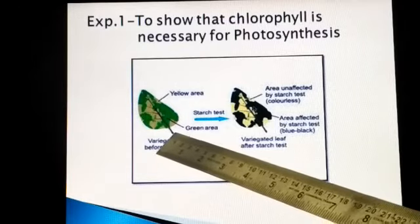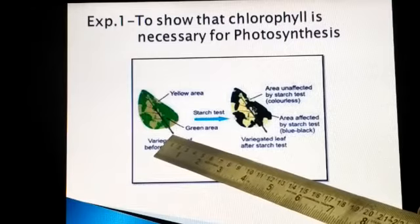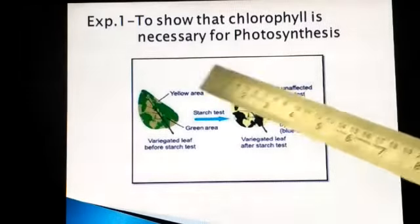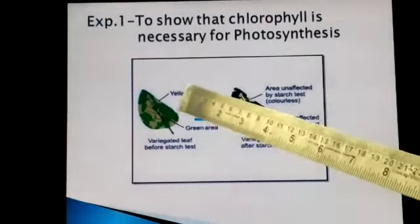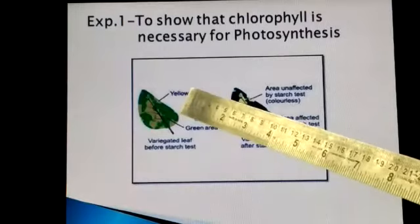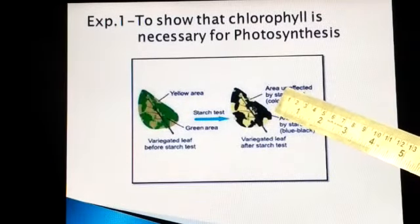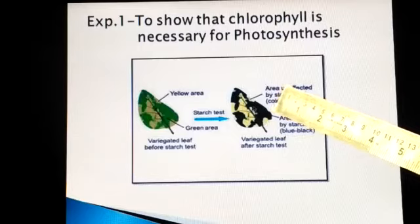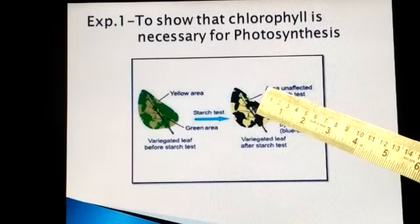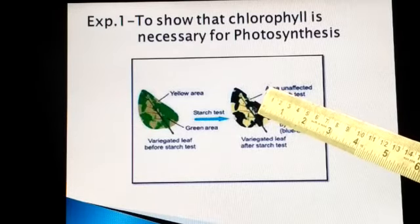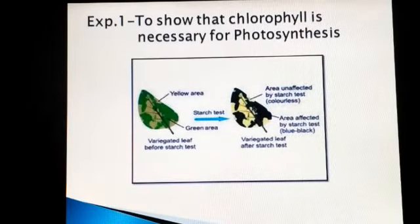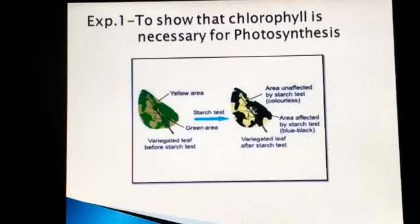This potted plant is first de-starched and then one leaf is taken for the starch test. After putting iodine solution, it is seen that the part of the leaf which had chlorophyll — the green part — showed a change in color to blue-black. The other differently colored parts remained without any change; they looked brown or yellow. So that confirms that chlorophyll is required for photosynthesis — cells without chlorophyll could not carry out the process.